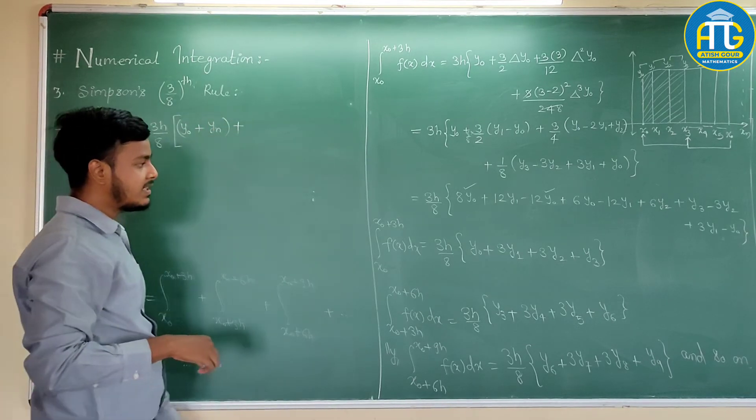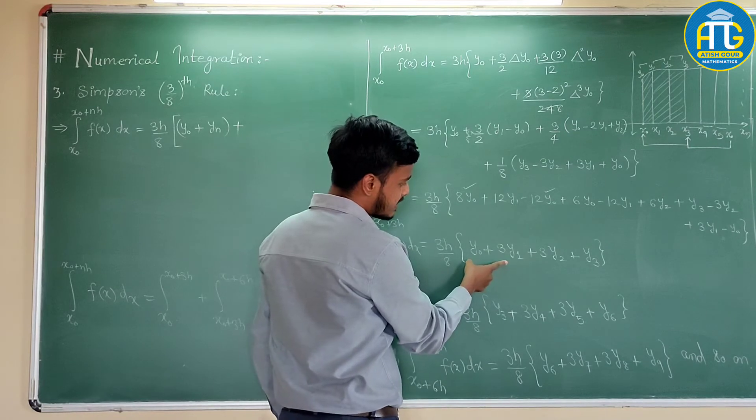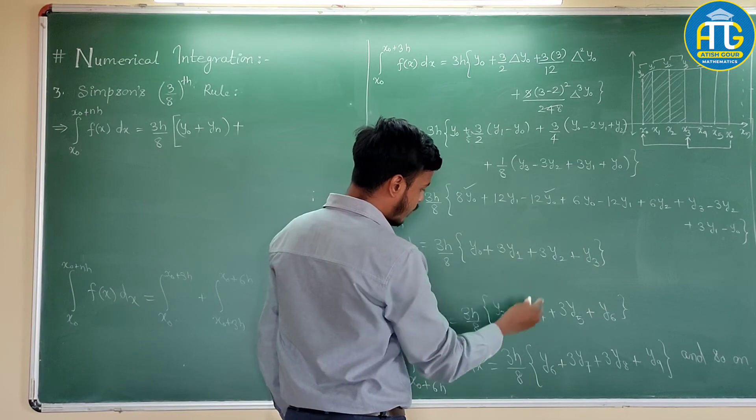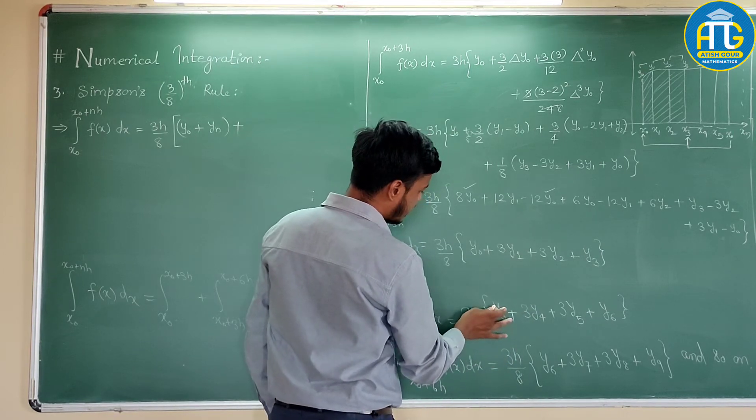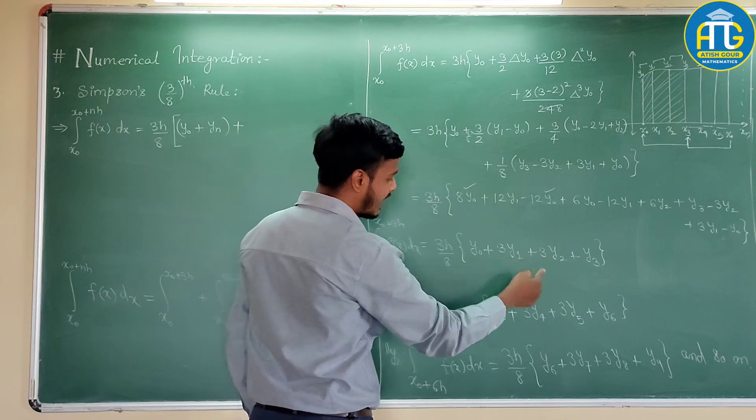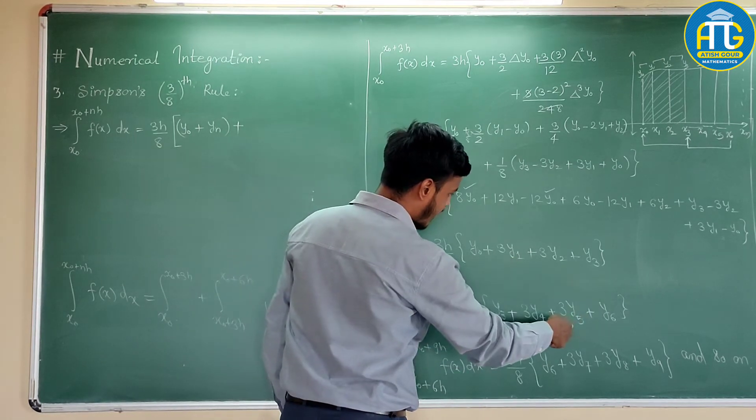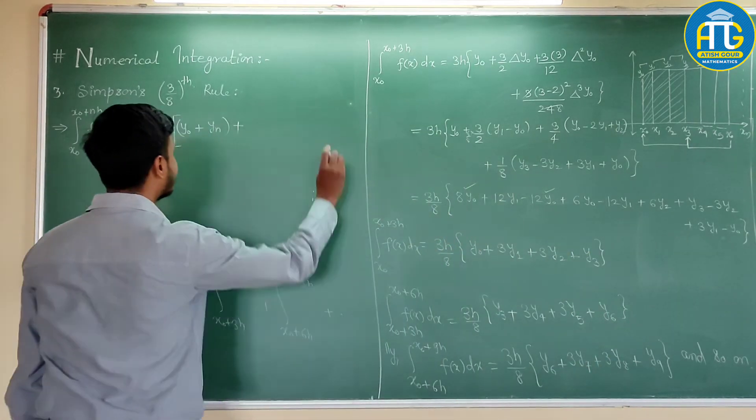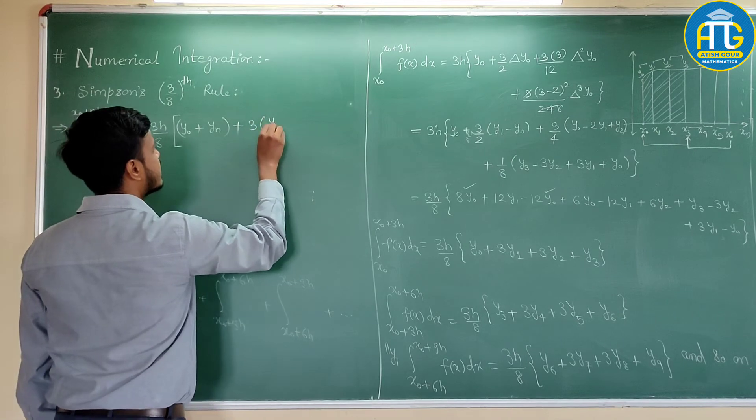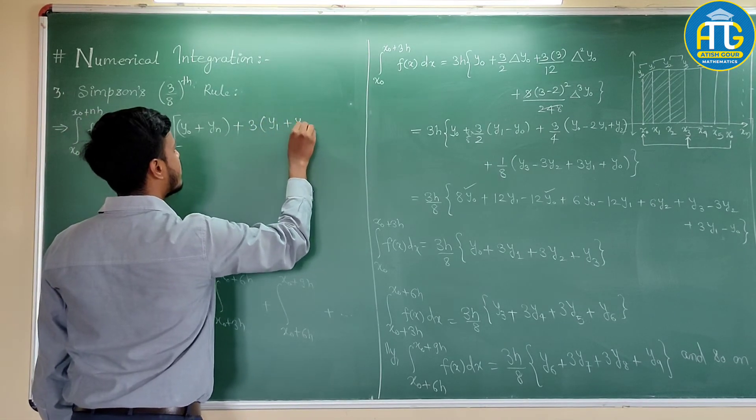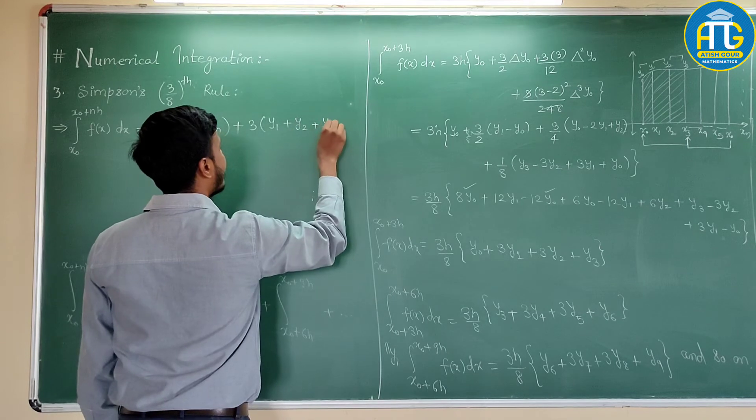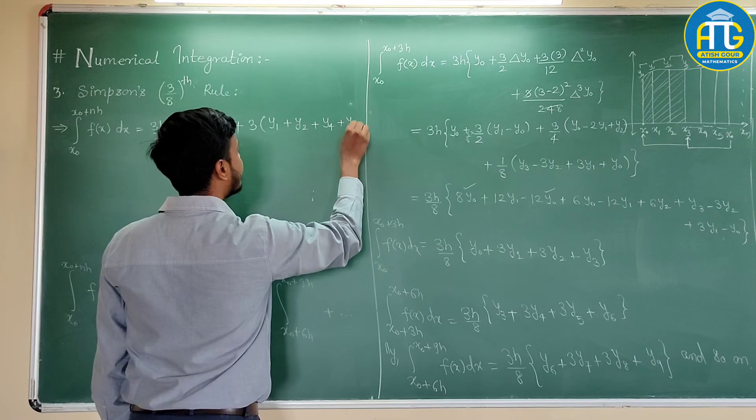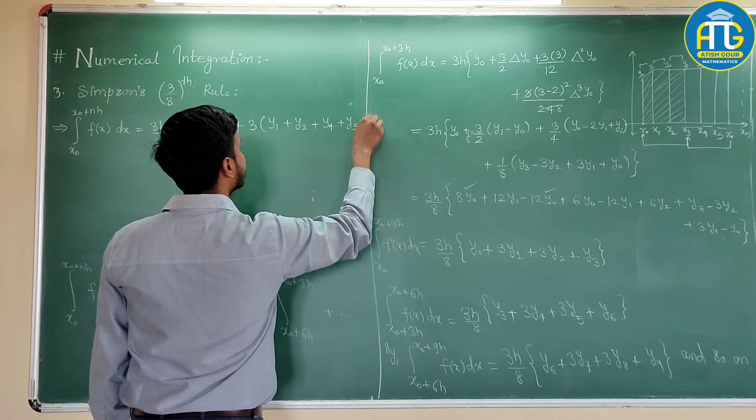Now, see the term of y1, 3 times, then y3, y1, this would be, y1, then 3 times y4, 3 times y5, 3 times y2, 3 times y7, 3 times y8. So, I just need to write 3 times (y1 plus y2 plus y4 plus y5 and so on).